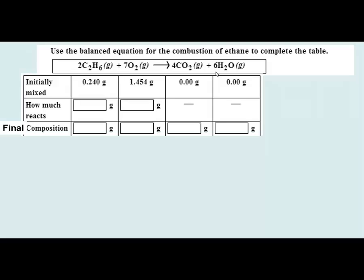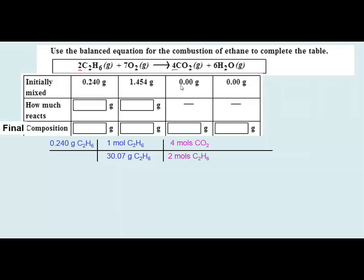I'm going to convert to moles and determine how much product might form as each reactant is consumed. If the full 0.240 grams of ethane were to react, its molar mass is 30.07 grams per mole. Once I'm in moles of ethane, I use the 2 to 4 stoichiometric ratio — 2 moles of ethane consumed for every 4 moles of CO2 formed. Then I multiply by the molar mass of CO2, which is 44.01 grams per mole.